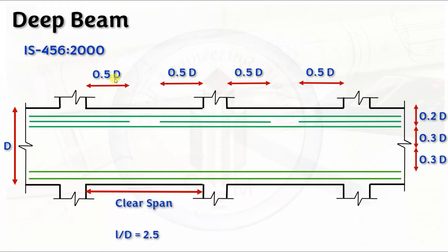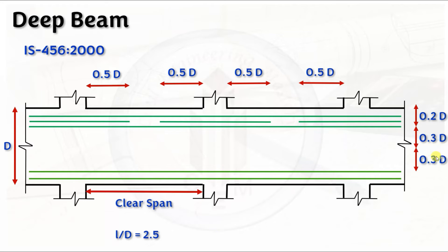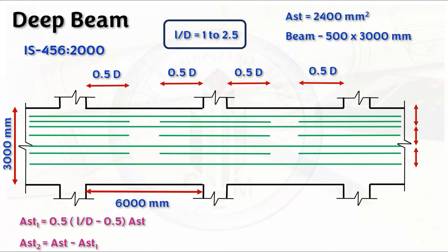To summarize with the example: the curtailment distance is 0.5d; half the reinforcement is curtailed and half extended over the full span. When l/d = 2.5, Zone 1 reinforcement is provided within 0.2d from the top tension face; Zone 2 spans 0.3d on either side of mid-depth. Note that 0.2d + 0.3d + 0.3d = 0.8d. If l/d is less than unity, distribute the negative reinforcement evenly over a depth of 0.8d.